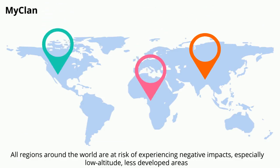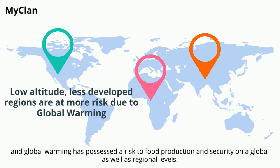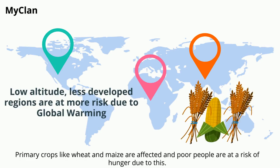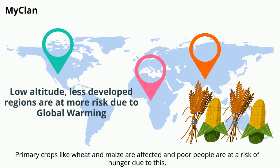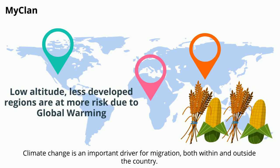Especially low altitude and less developed areas are particularly vulnerable, and global warming has posed a risk to food production and security on both global and regional levels. Primary crops like wheat and maize are affected, and poor people are at risk of hunger. Climate change is also an important driver for migration, both within and outside the country.